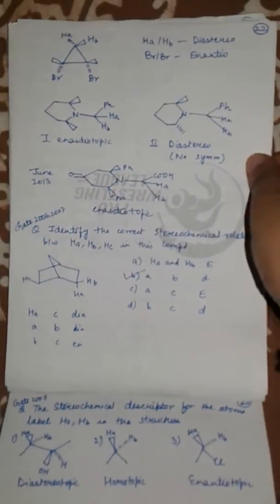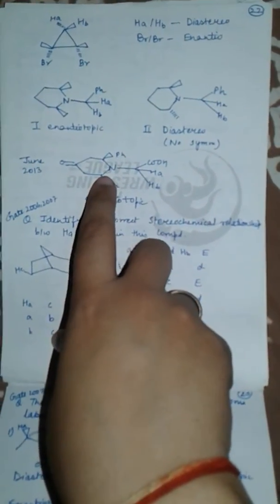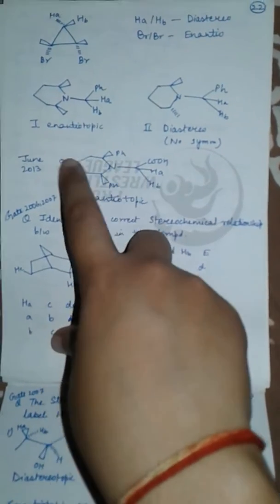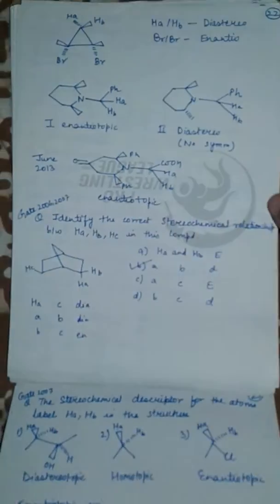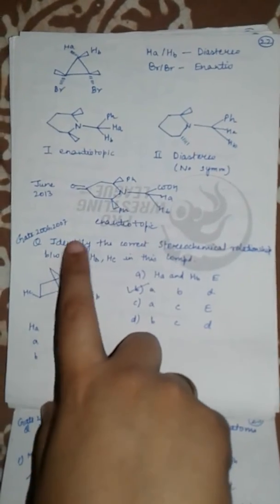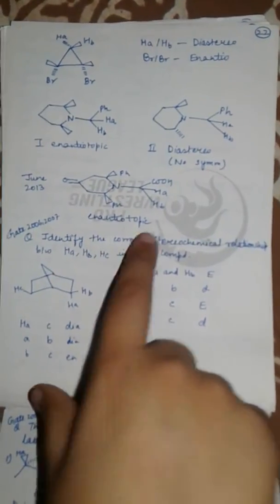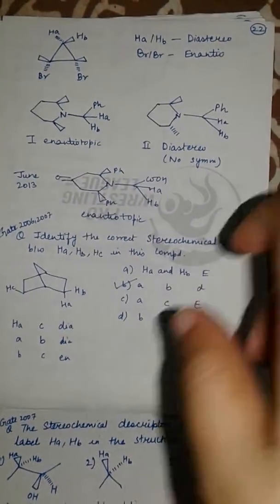In this it is diastereotopic because there is no symmetry in this compound. It is enantiotopic because when the axis is passed, H_A and H_B will be reflected. There is a question: identify the correct stereochemical relationship between H_A, H_B, and H_C in this compound.